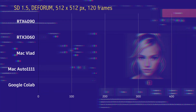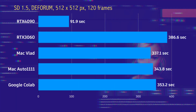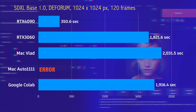With the Deforum animation, the picture gets even clearer. At 512x512 pixels, the 4090 is just unbeatable while the other GPUs are doing pretty much the same. With SDXL, the picture gets rather grim for anything other than the 4090. And the Mac is again the worst performer and throws an error again with Automatic1111.